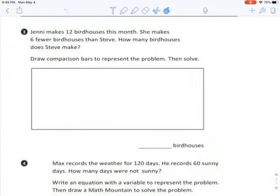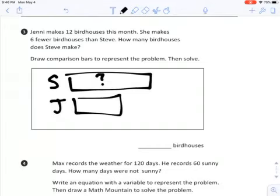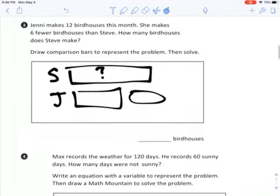Number three, Jenny makes 12 birdhouses this month. She makes six fewer birdhouses than Steve. How many birdhouses does Steve make? So this is where you do a comparison bar to help solve the problem. Just going to give you a little bit of a hint here. Jenny makes 12 birdhouses this month. She makes six fewer than Steve. So we don't know how many Steve makes. And then Jenny makes 12. Just remember, you need to make a comparison bar to represent the problem, then solve it. That's just a little bit of a clue just to help.